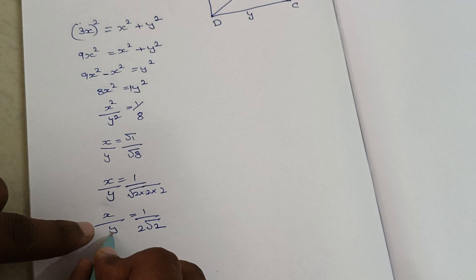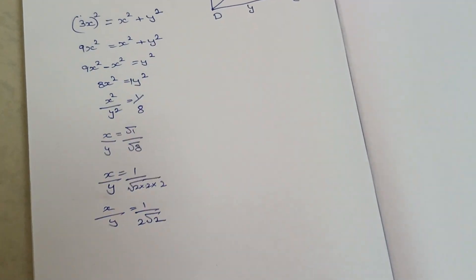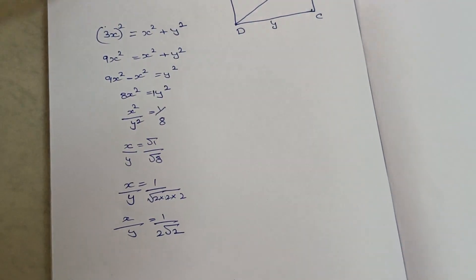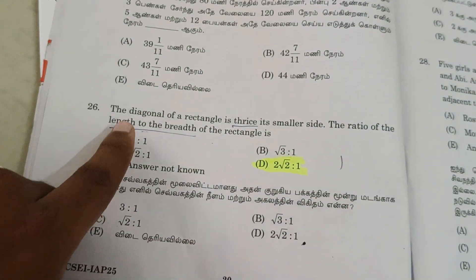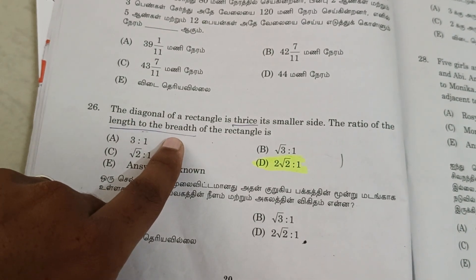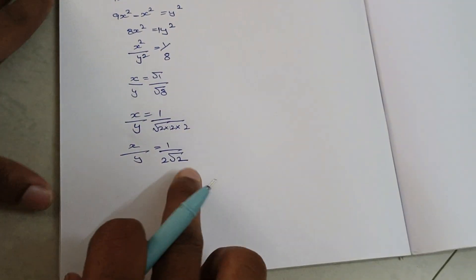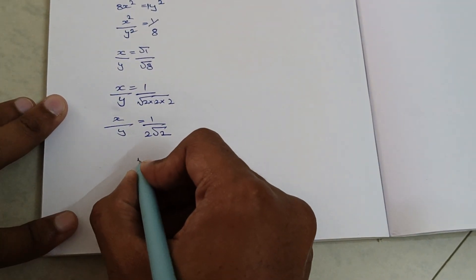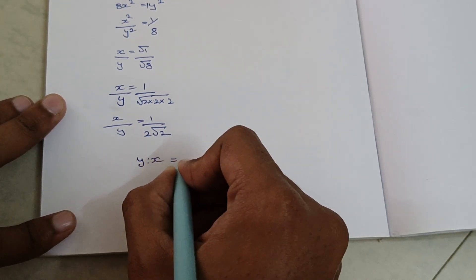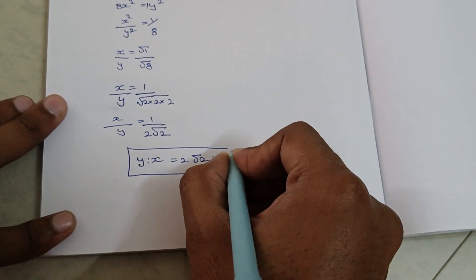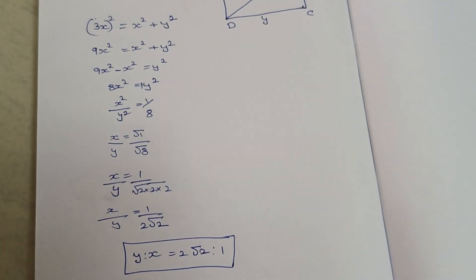So y is equal to length and x is equal to breadth. They are asking for the ratio of length to breadth. So x to y equals 1 to 2√2. This is the answer. If you want to subscribe to this channel, you can subscribe.